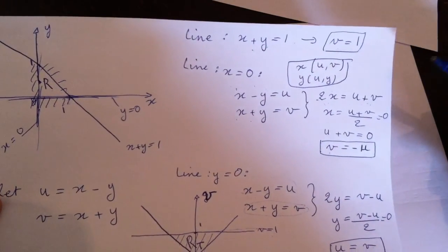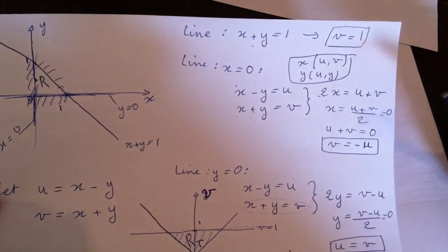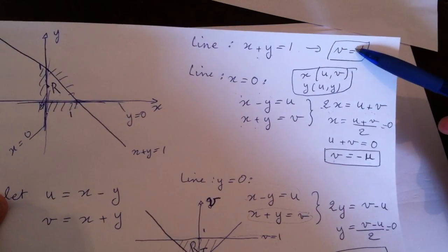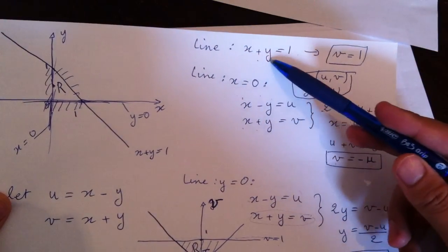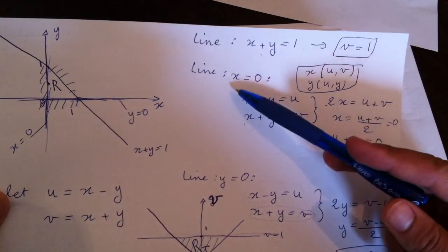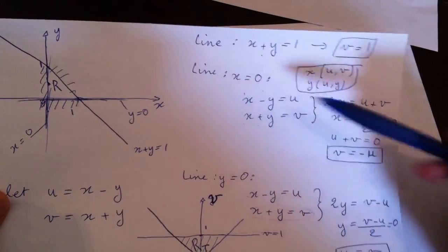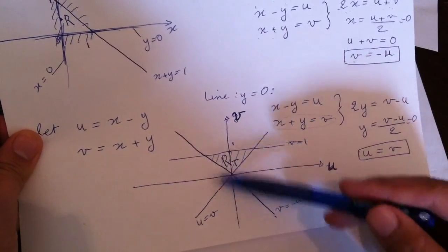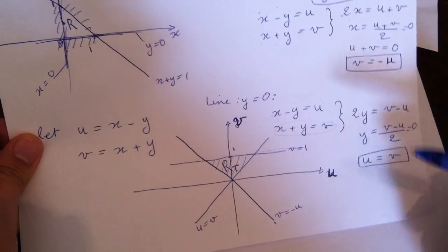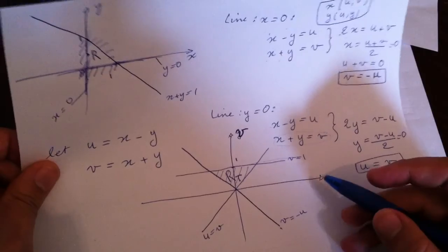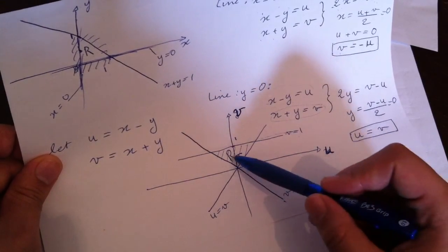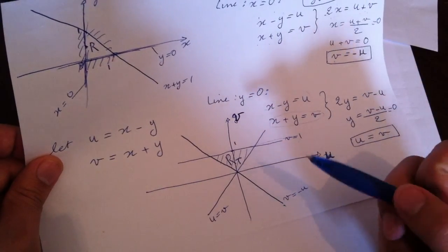We found the corresponding bounding lines from each of the original lines — this one from that line, this one from that line, this one from that line — and those are the three bounding lines of the transformed region. We have to draw it because it makes it easier to see the boundaries of the transformed double integral, which I will show you now.